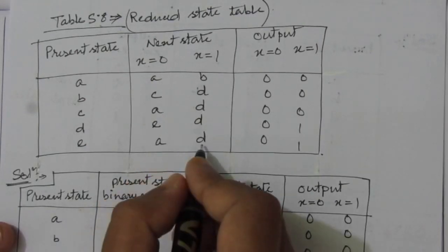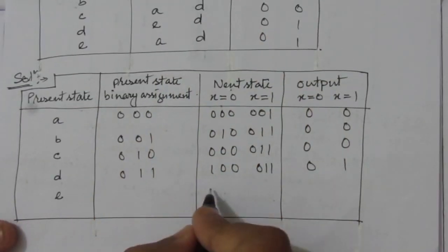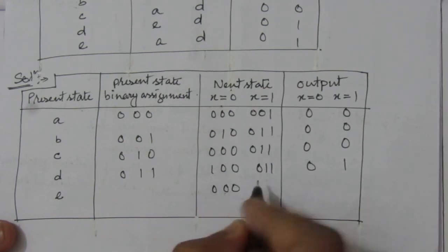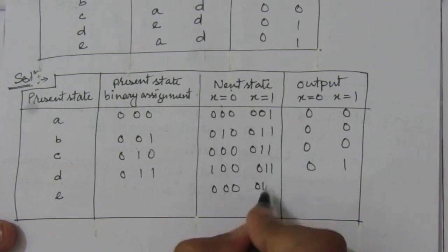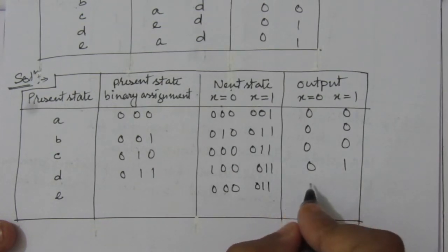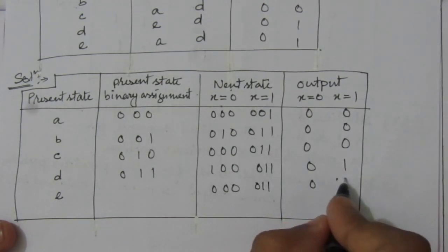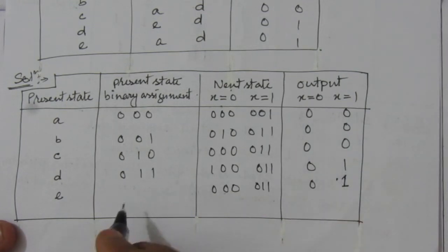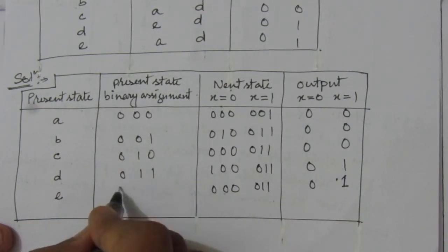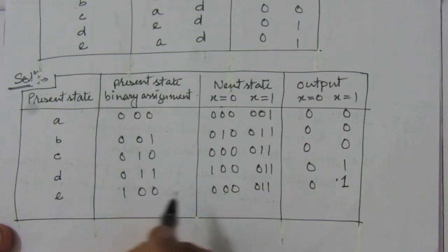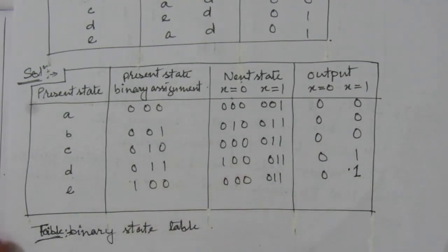For present state e, the next states are a and small d. For small a, the binary representation is 0, 0, 0, and for small d, we have 0, 1, 1. The outputs are 0 and 1. The binary representation of e is 1, 0, 0. This completes the binary state table.